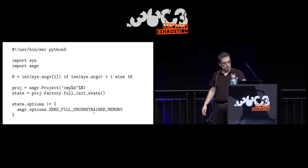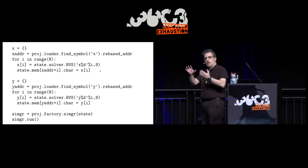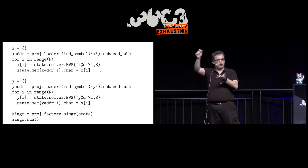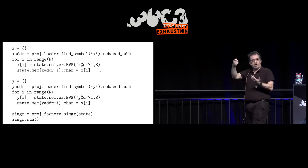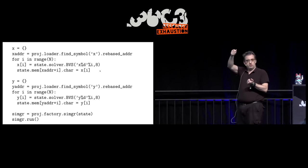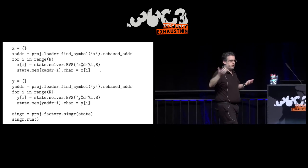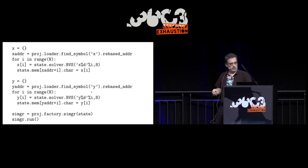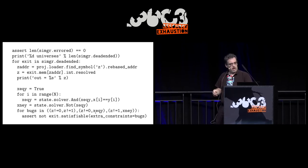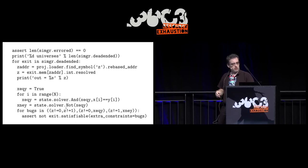How does Angr work? We take this binary, pass it through Angr. Instead of having X and Y, we replace these memory locations with something else — a different variable. We might not even know what it is, we just substitute the variable. Then you run the program, compute Z, and extract Z.